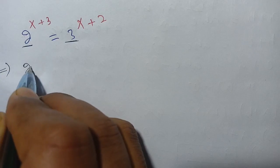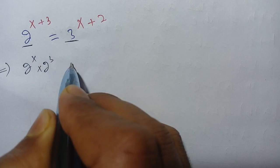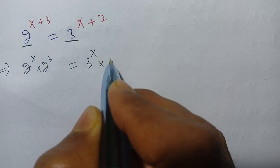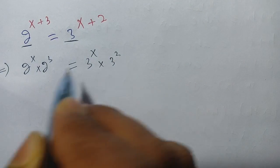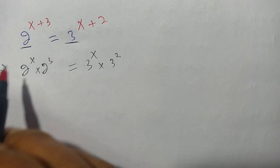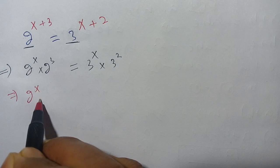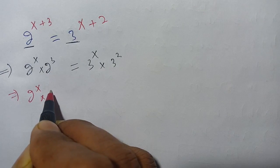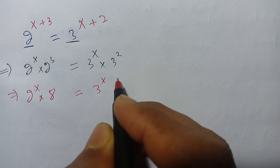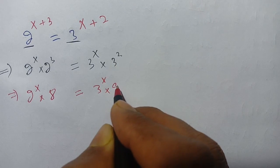We can write this as 2 power x times 2 power 3 is equal to 3 power x times 3 power 2. We know that 2 power x is 2 power x, and 2 power 3 becomes 8, is equal to 3 power x into 3 power 2, which becomes 9.